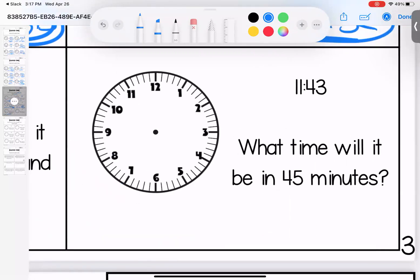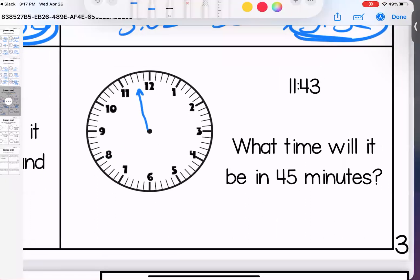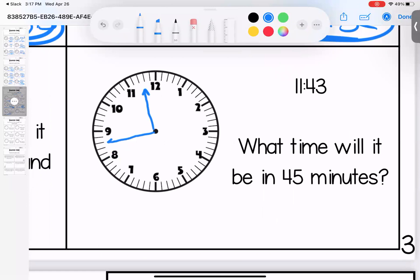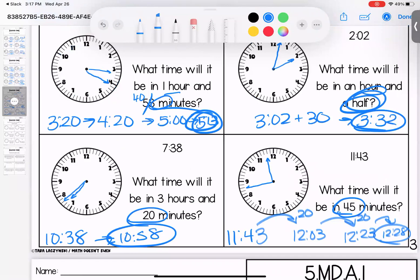Last one. It is 11:43. What time will it be in 45 minutes? Well, 11:43, get the right starting point. So let's do 20 minutes would be 12:03, right? So 40 plus 20 would be 12:03. Another 20 minutes would be 12:23, and then five minutes would be 12:28. Questions on this page? Bring them with you to class.